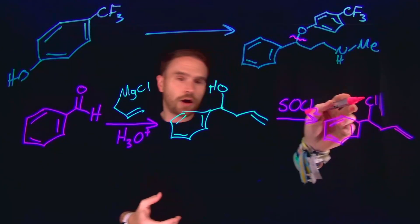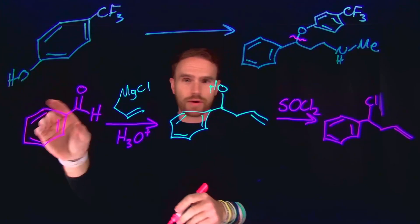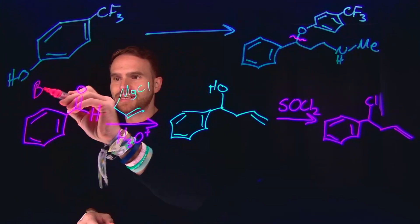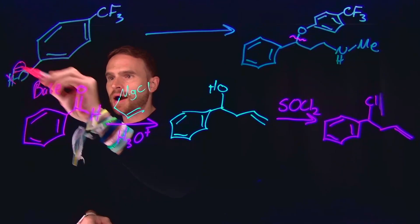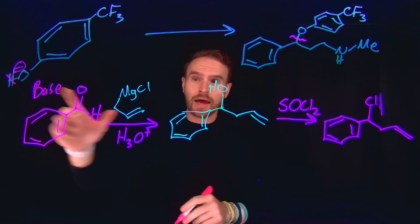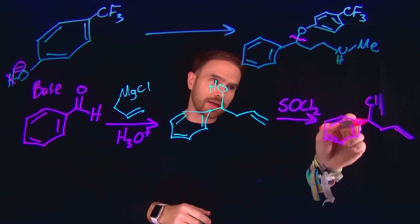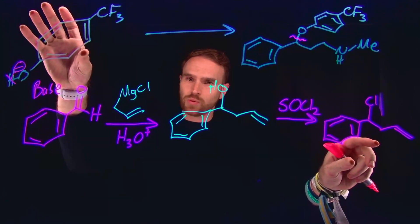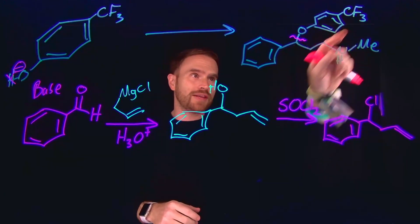And also knowing that all I need to do now is deprotonate this with some base. So if I deprotonate this reactant, then that's going to leave behind this alkoxide or phenoxide, which will do a substitution reaction here. So all I have to do is combine these two reagents in order to add on this chain.